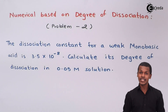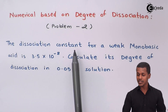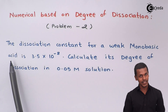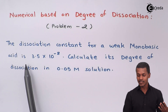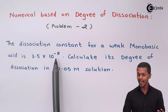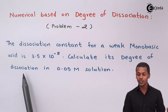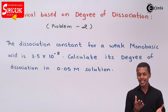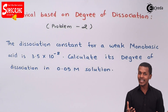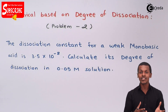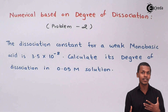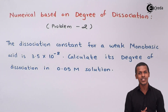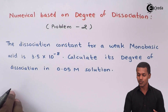The numerical is given as follows: the dissociation constant for a weak monobasic acid is 3.5 × 10⁻⁸, and we have to calculate its degree of dissociation in 0.05 molar solution. The data has been given very clearly, so let us extract the data first, and based on that we will make a formula to easily calculate the requirement.